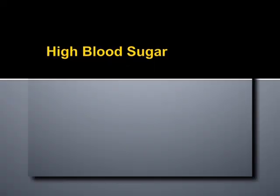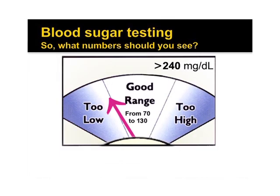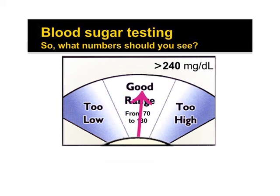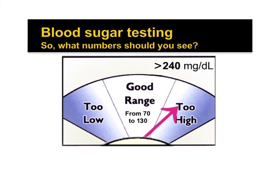High blood sugar or hyperglycemia is defined as a blood sugar above 240 milligrams per deciliter. When this happens, the body does not have enough insulin.